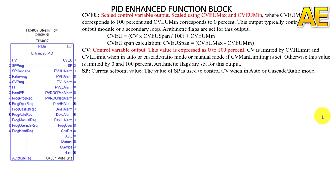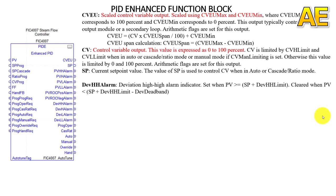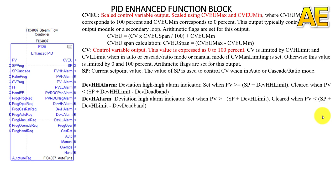The next output is SP — the current setpoint value used to control the CV when in auto or cascade or ratio mode. Next is the Deviation High High alarm indicator — set when PV is greater than or equal to the sum of setpoint plus deviation high high limit, and cleared when PV is less than that sum minus the deviation dead band. Next is the Deviation High alarm indicator — set when PV is greater than or equal to setpoint plus deviation high limit, and cleared when PV is less than that value minus the deviation dead band.